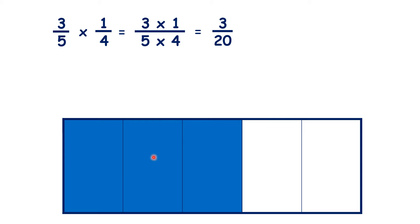So if we start with 3 fifths, and we're multiplying by a quarter, we're really splitting each of those fifths into quarters, we're really dividing by 4, and that gives us 3 20ths.